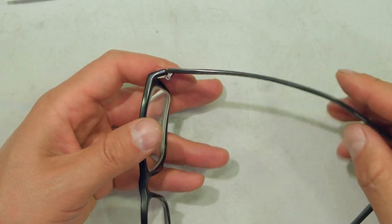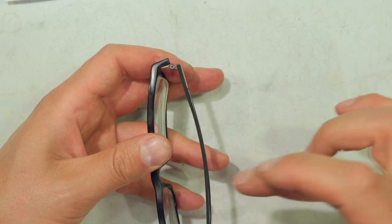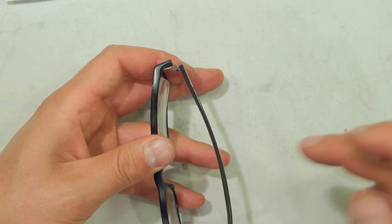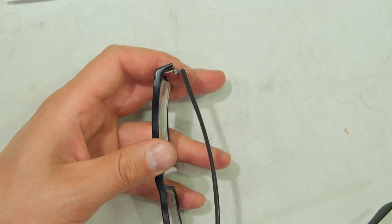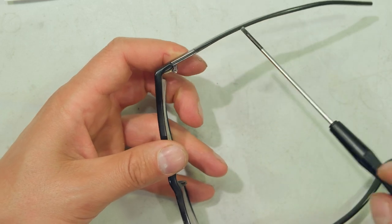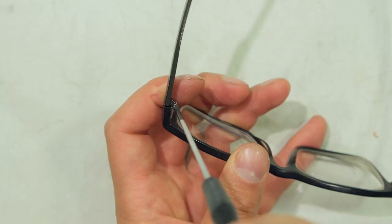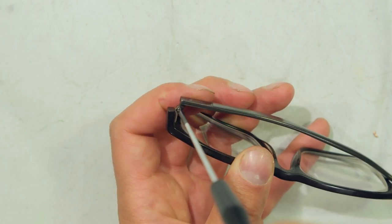Now in some cases, you might find that the screw is already tight, yet the temple is loose. For example, there's the screw. I mean, even if I try and tighten it, it's really tight.